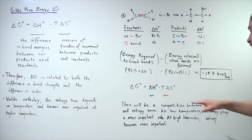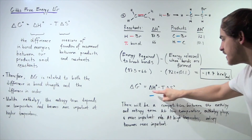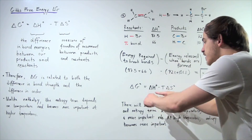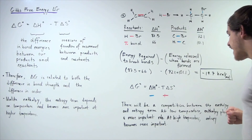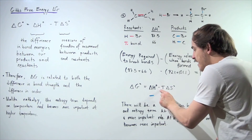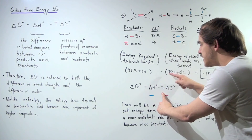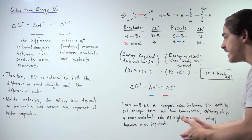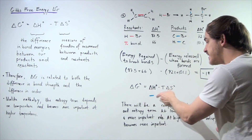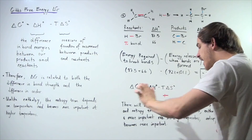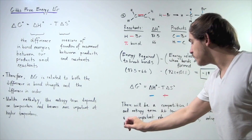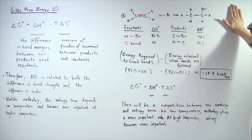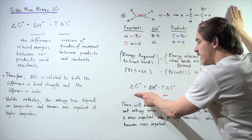At a low temperature, the entire T·ΔS term is small, so enthalpy plays a more important role and will likely dominate, making the reaction spontaneous. But at higher temperatures, the T·ΔS term is magnified and will eventually become more positive than the negative enthalpy term. At some high enough temperature, the overall change in G becomes positive, meaning entropy becomes more important at high temperatures and the reaction becomes non-spontaneous.